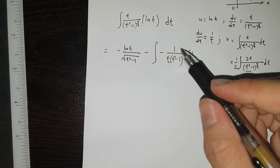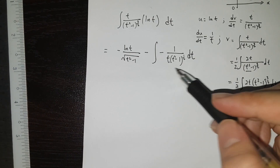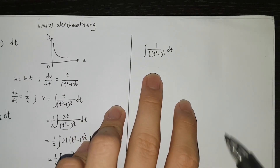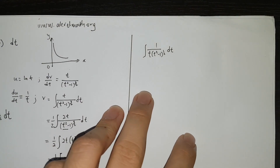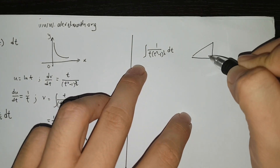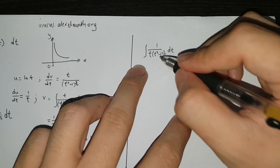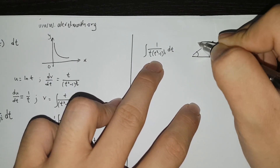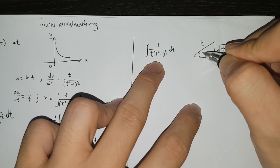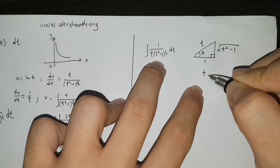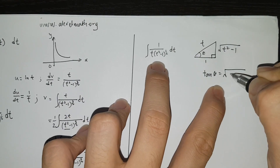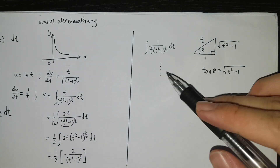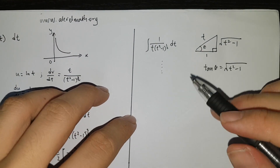Once you get this expression, we need to integrate the remaining term. This integral is not that straightforward. Method 1: if you draw a right-angle triangle, to get square root of (T squared minus 1), T has to be the hypotenuse and 1 the adjacent side. So you let tan theta equal to square root of (T squared minus 1). You can refer to my other videos on how to do this trigonometric substitution and get the answer.